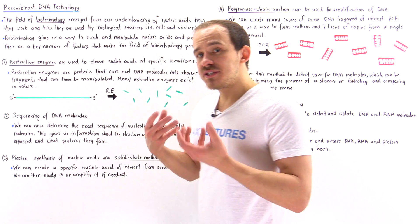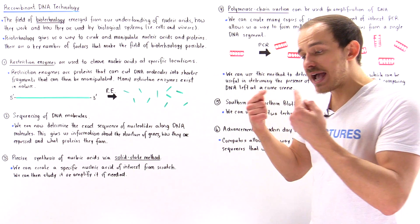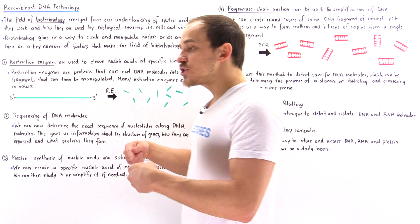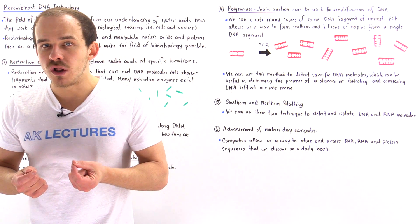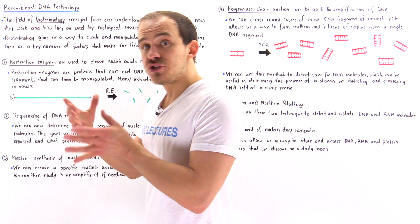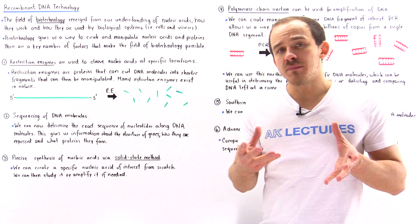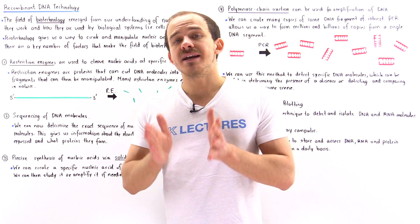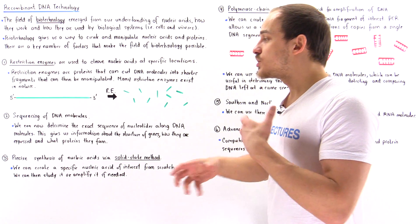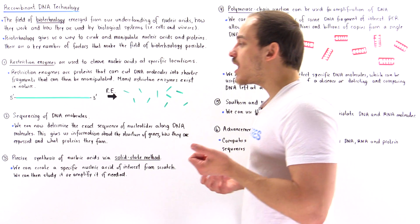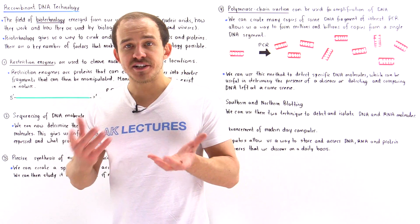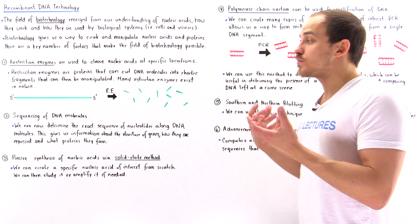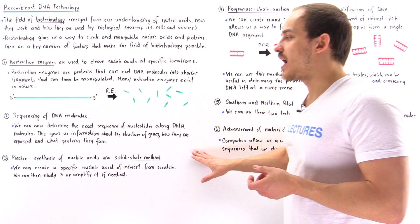And once we know what the sequence of nucleotides in that DNA is, we can then determine what the corresponding sequence in the RNA will be. And we can use that and the genetic code to basically determine what the structure and the sequence of the protein is that is encoded by that gene. So this allows us to basically study how gene expression takes place and how we synthesize and which proteins we actually synthesize.